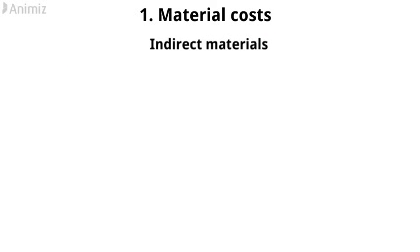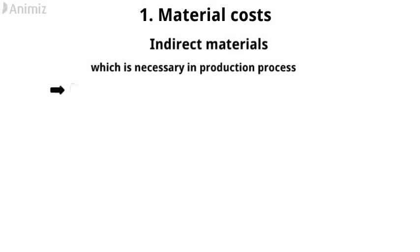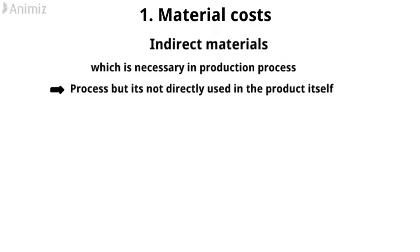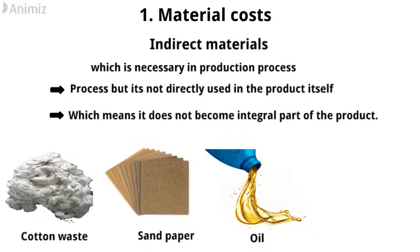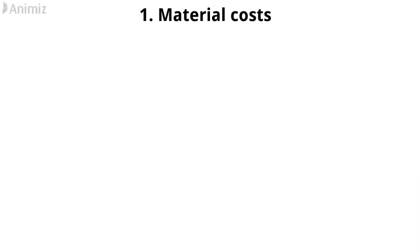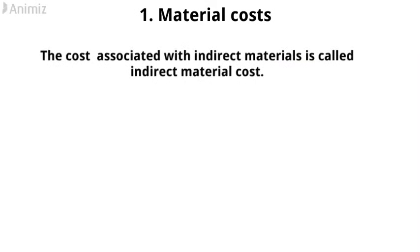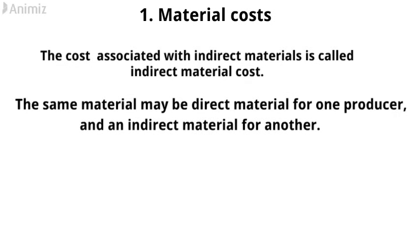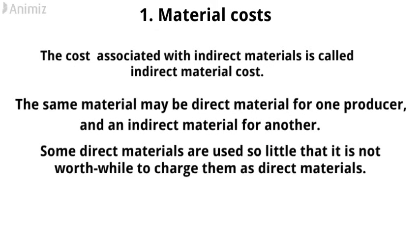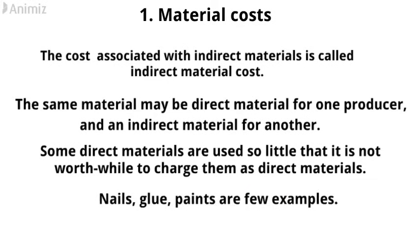An indirect material is one which is necessary for the production process, but it is not directly used in the product itself, which means it does not become an integral part of the product. Examples: cotton waste, sandpaper, oil, greases, etc. The cost associated with indirect materials is called indirect material cost. The same material may be direct material for one producer and an indirect material for another. In certain cases, some direct materials are used so little that it is not worthwhile to charge them as direct materials — nails, glue, paints are a few examples. In such conditions, these materials are charged as indirect materials or overheads.